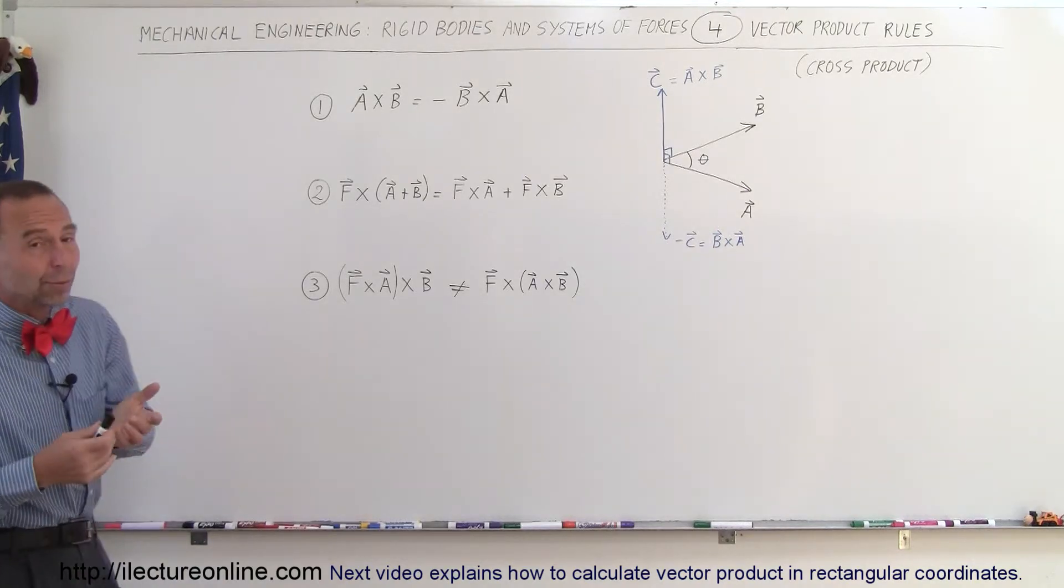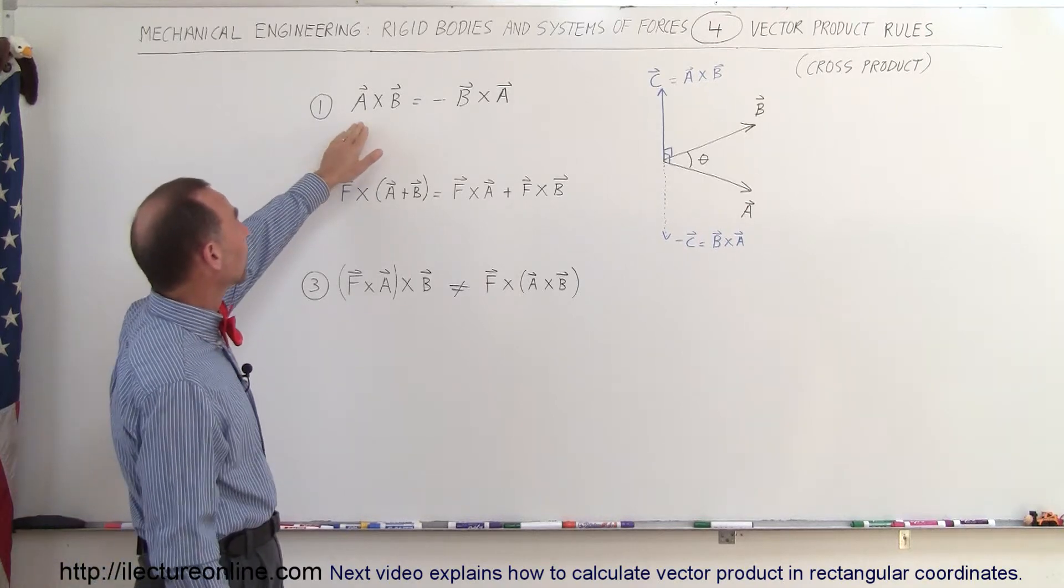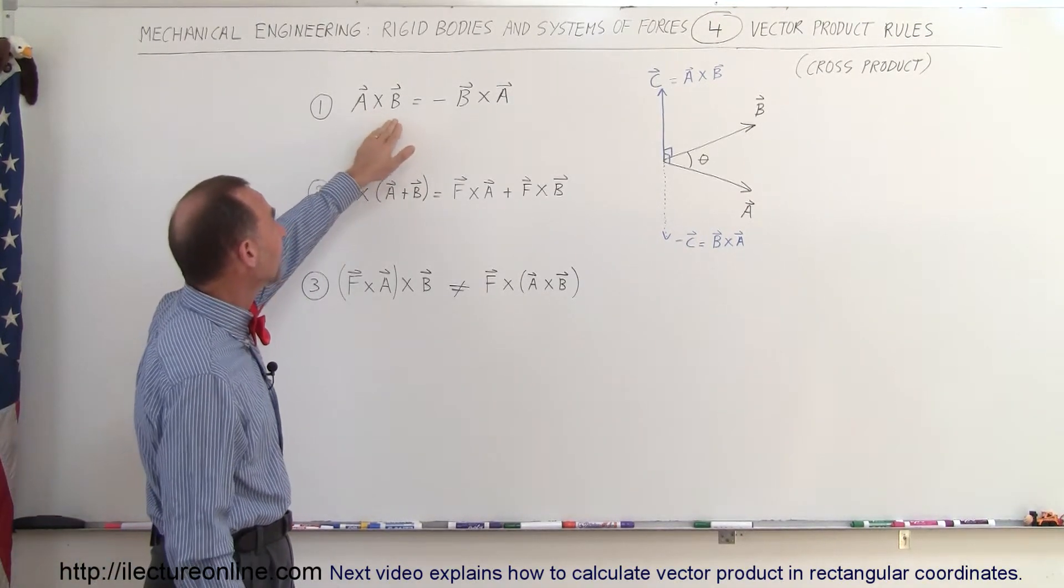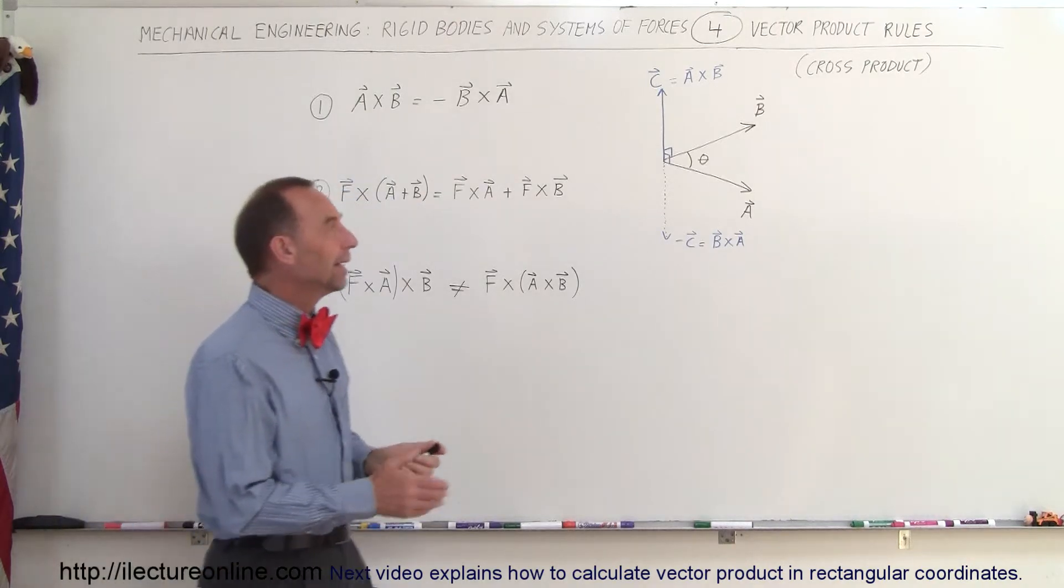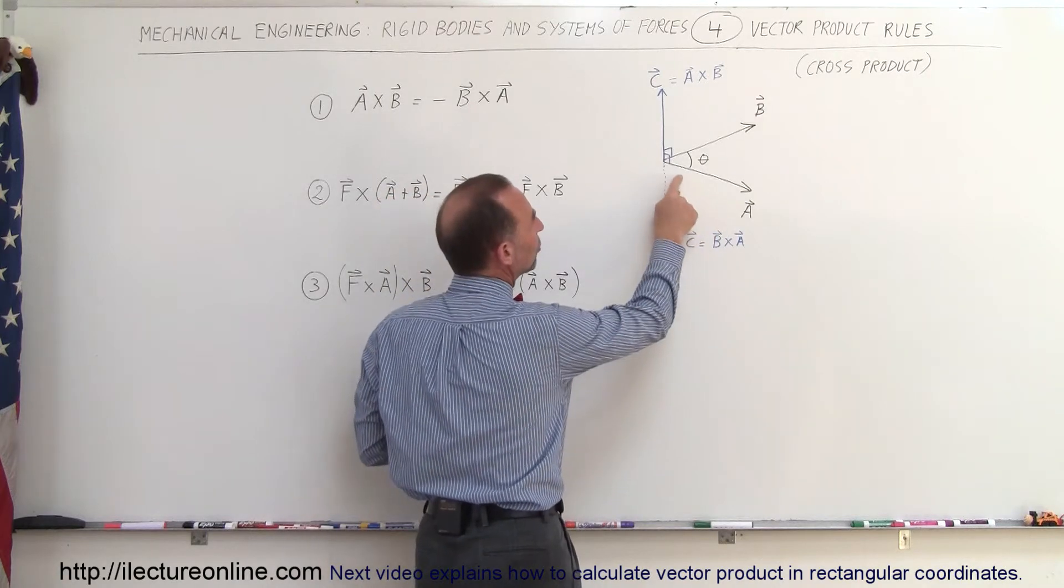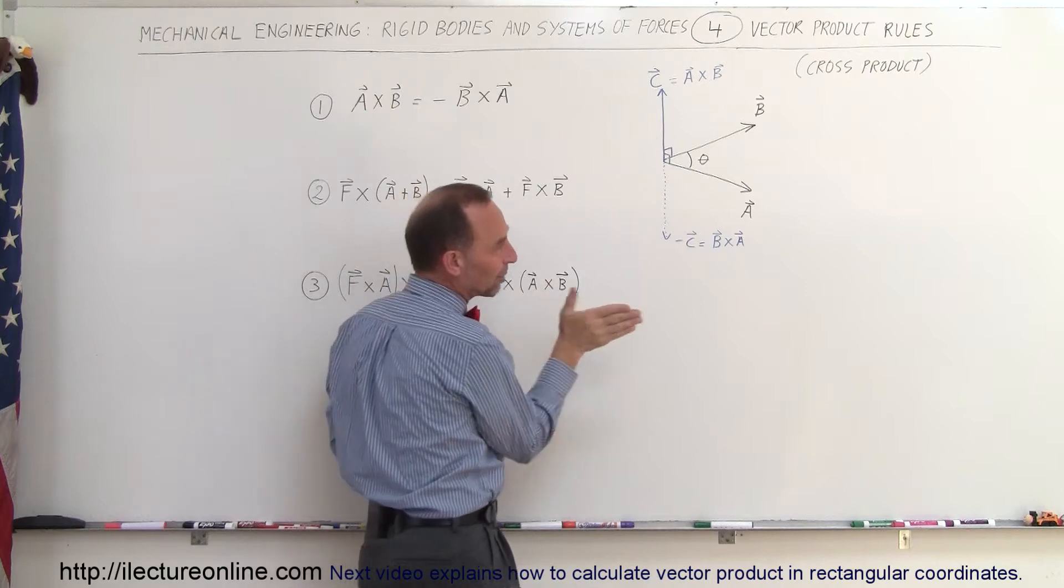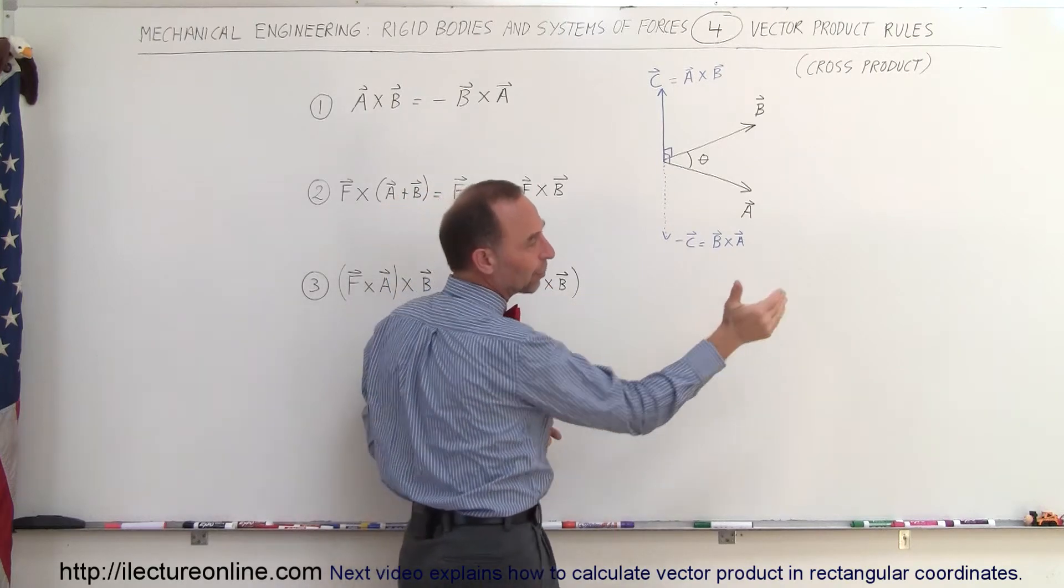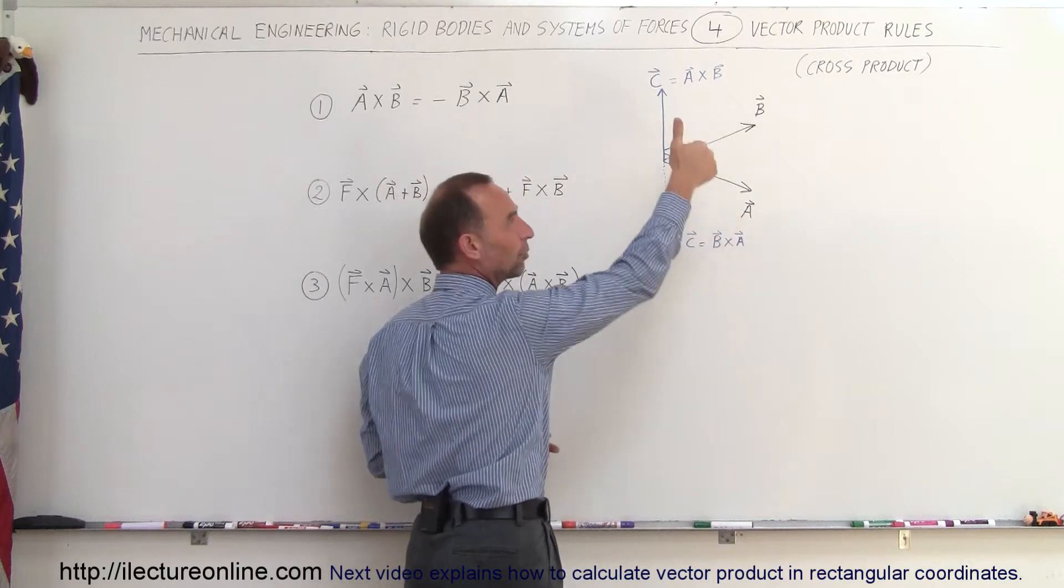So the first one, we're probably already familiar with that one, is that we have a cross product, A cross B, or the vector product A times B, is equal to the negative of B times A. And the reason for that is simply the rule of cross products, is that when you do a product between two vectors, you take your fingers and you point them in the direction of the first vector, then you point your fingers in the direction of the second vector, so we go A cross B and your thumb points upward.